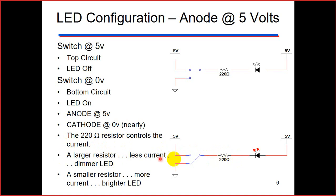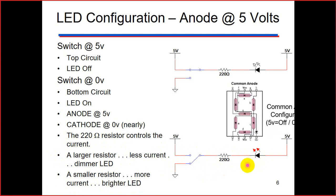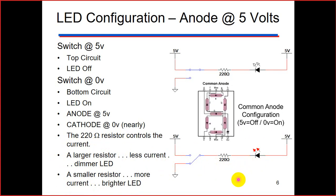A larger resistor means less current and the LED will be less bright. A smaller resistor means more current and a brighter LED. So in the common anode configuration, 5 V on the anode and 0 V on the cathode makes it turn on.